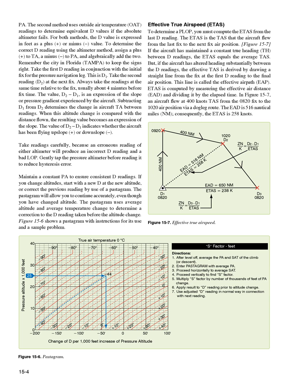Effective true airspeed (ETAS): to determine a PLOP, you must compute the ETAS from the last D reading. The ETAS is the TAS that the aircraft flew from the last fix to the next fix air position. Figure 15-7 shows if the aircraft has maintained a constant true heading (TH) between D readings, the ETAS equals the average TAS.